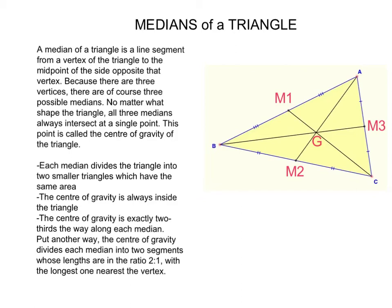Another interesting feature of medians is that the center of gravity divides each median into two segments in a ratio of 1 to 2. For example, segment M1G is half the size of GC.